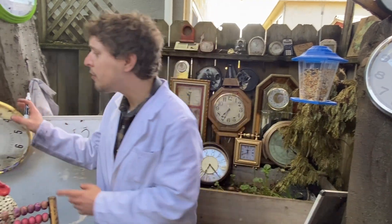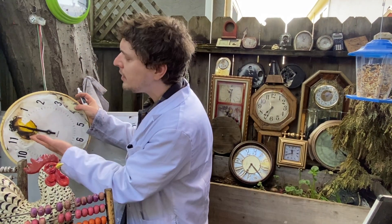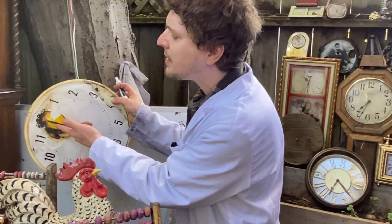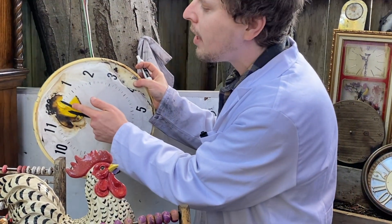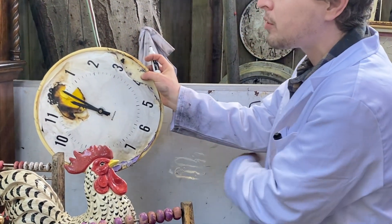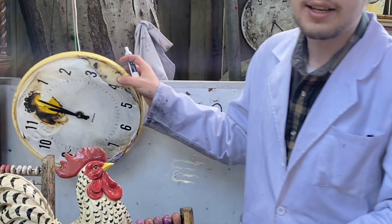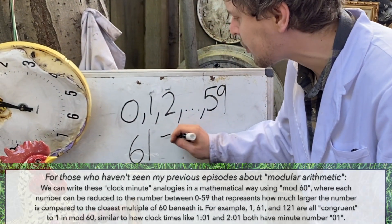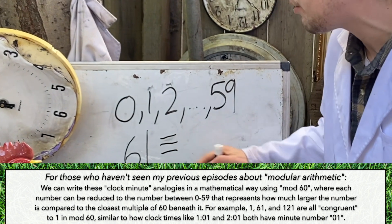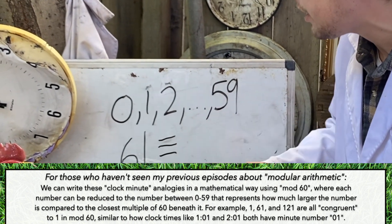Since clocks move in a cyclical way, if I ever did something like move 61 minutes, I would end up on the same number as one of these smaller values, 1 minute in that case, and I could say that 61 is congruent to, sort of like the modular equal sign, 1 in this mod 60 where we were thinking about minutes on a clock.